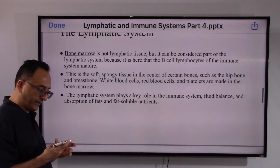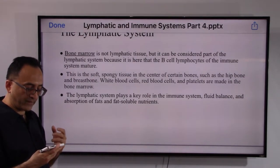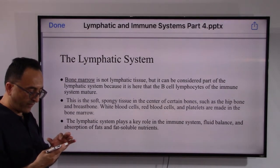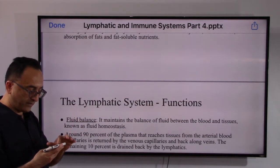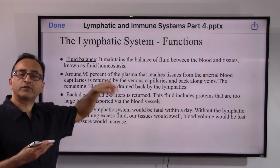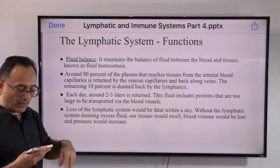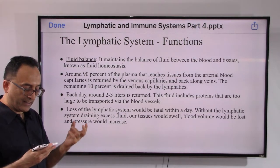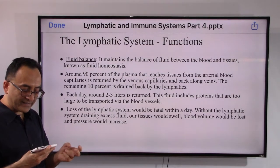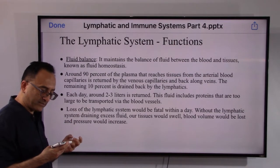The lymphatic system plays a key role in three main things: immune response, fluid balance, and absorption of fats and fat-soluble nutrients. Starting with fluid balance — remember 20 liters circulate, 18 liters come back, and the remaining 2 liters, about 10 percent of the circulated fluid, is something the lymphatic system plays a big role in balancing. It maintains fluid homeostasis between the blood and the tissues.